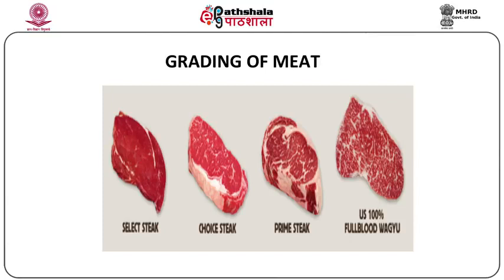The fat marbling gives the meat its tenderness and juiciness. The next grade is called the choice cut. They have a little less marbling when compared to the prime and this is widely available in most markets. The select is the third type of meat based on its quality. It has the least amount of marbling, making it leaner and a little less juicy and a little less flavorful when compared to the prime and the choice.